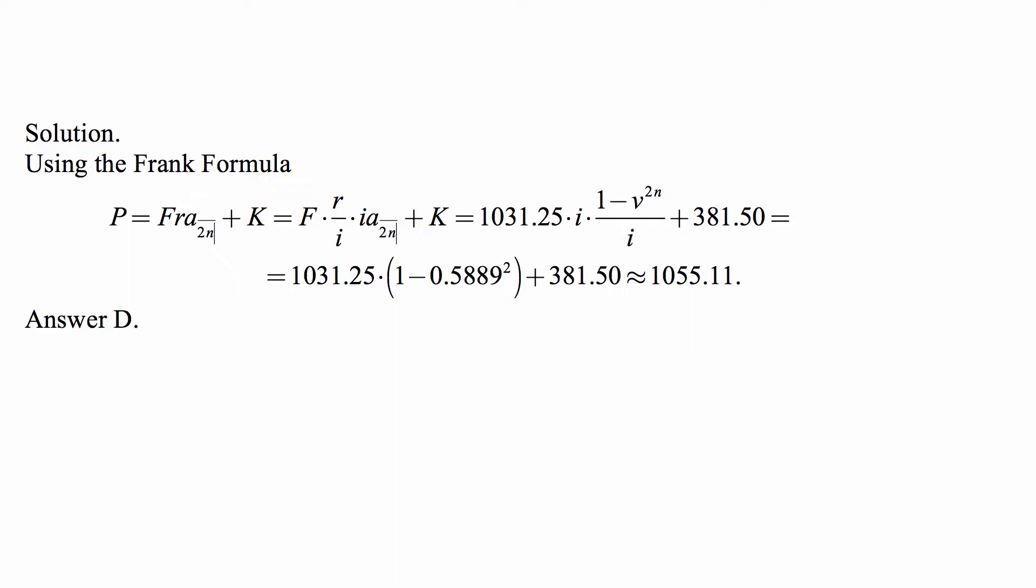So FR times A angle 2N plus K, where N is the number of years, so that 2N is the number of half years.